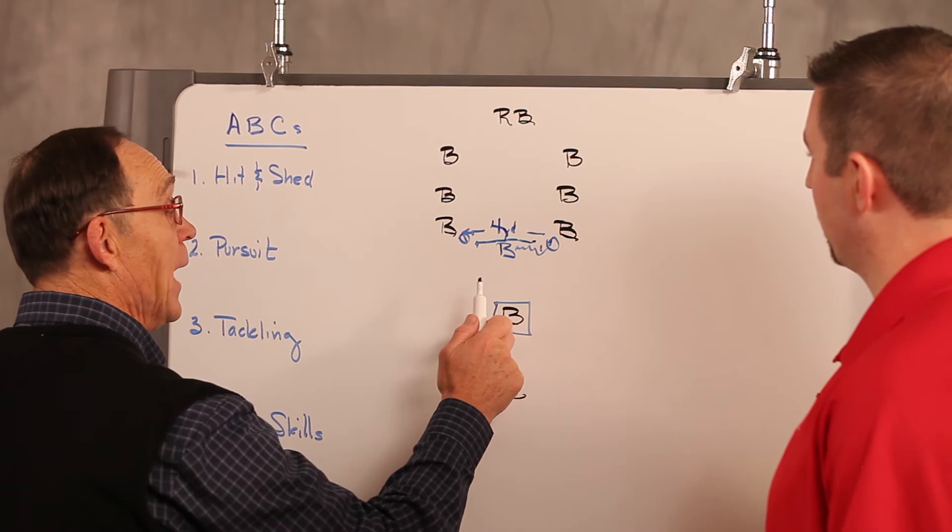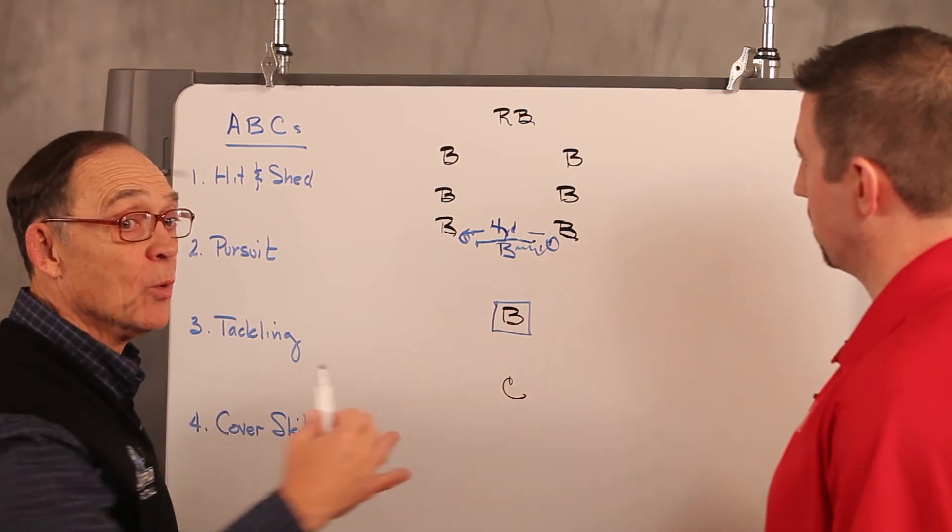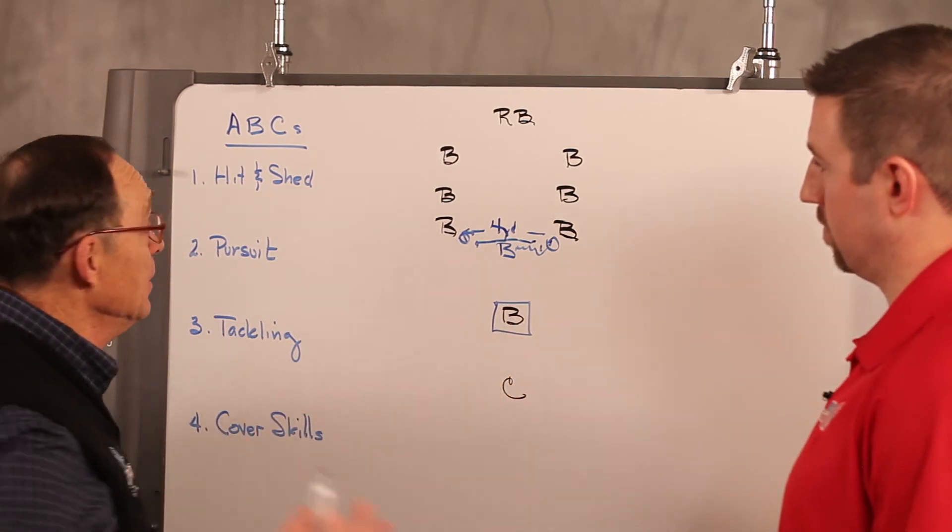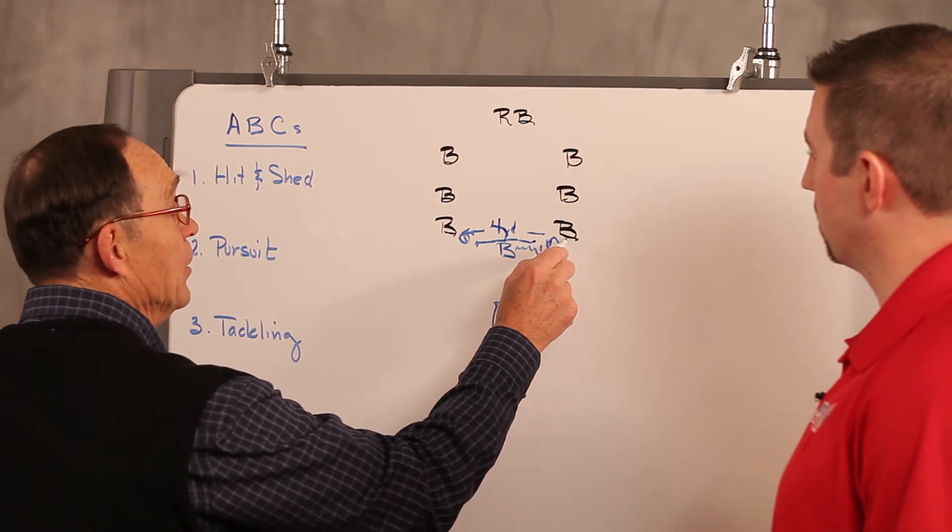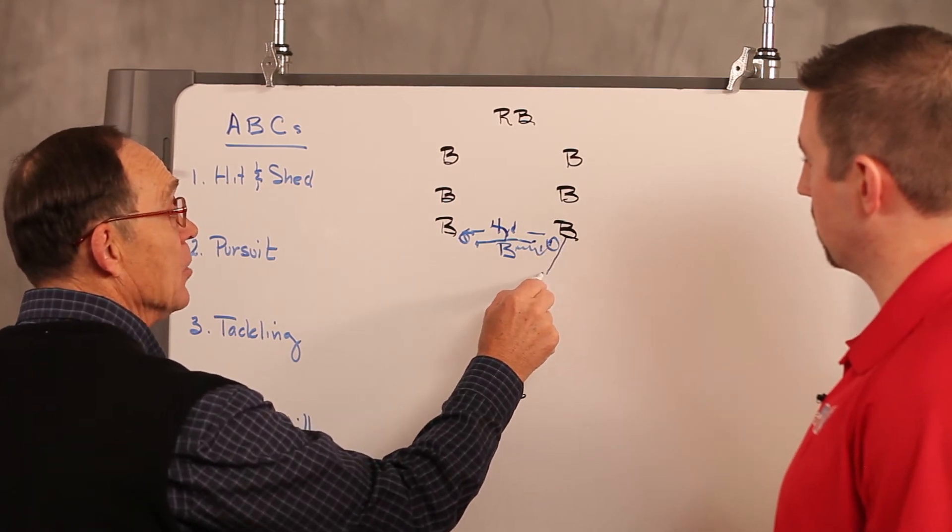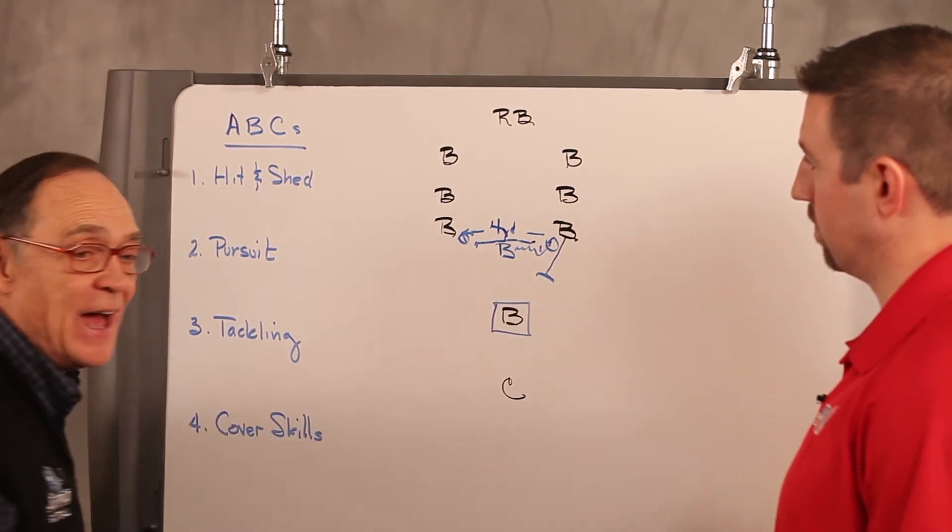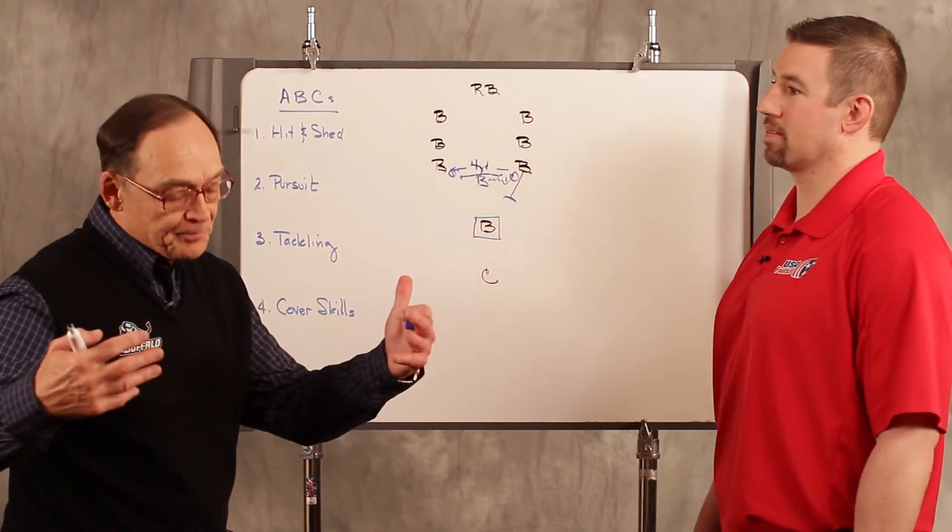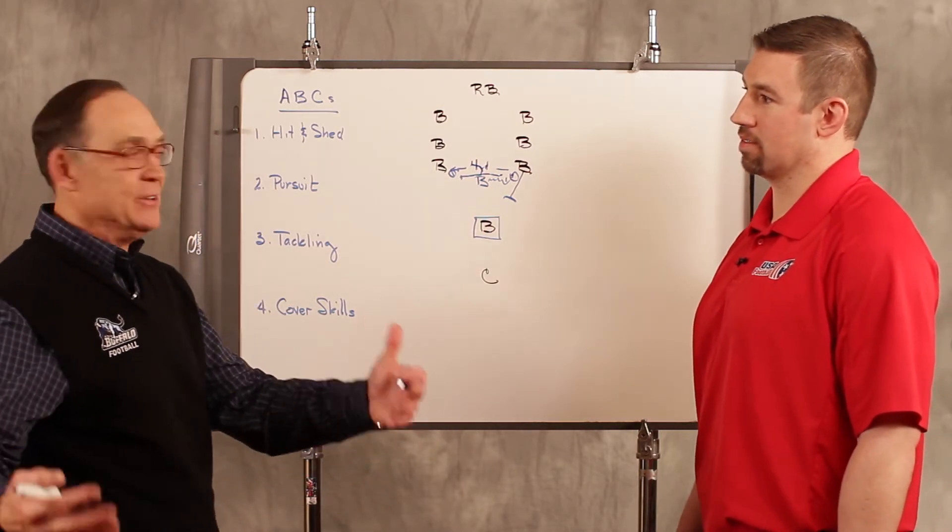And then we will actually have the linebacker gain depth wherever you play them, four yards off the ball, three yards off the ball, and we will now have a blocker attack him.